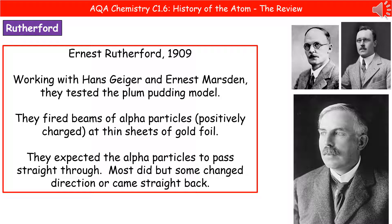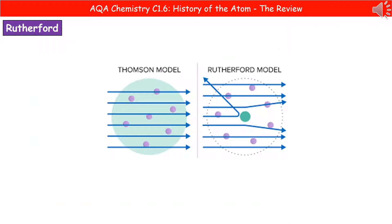The next scientist doesn't come around until 1909, and it's Ernest Rutherford — again, we need to remember his name. Rutherford worked alongside Hans Geiger and Ernest Marsden and they were putting the plum pudding model to the test. They had very thin sheets of gold foil and fired beams of positively charged alpha particles at them. They expected those alpha particles to pass straight through, but what they actually found was that some changed direction and others actually bounced straight back at where they were fired from.